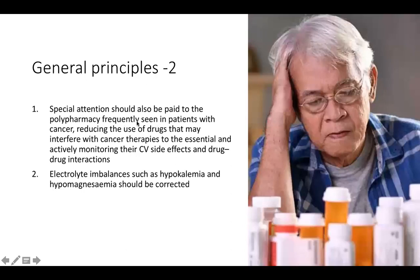Special attention should be paid to polypharmacy. A cancer patient, especially if elderly, could have many drugs for hypertension, diabetes, and dyslipidemia, in addition to protective drugs and chemotherapy — this is polypharmacy. These drugs may interfere with the cancer therapies, so essential and active monitoring of cardiovascular side effects and drug-drug interactions is needed. It is also very important to monitor electrolyte imbalances such as hypokalemia and hypomagnesemia, and oncologists do regular labs before each cycle.